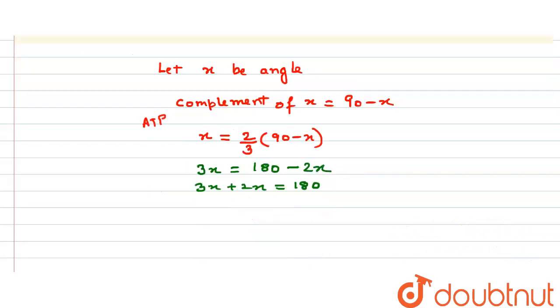Simplifying further, 5x equals 180. So x equals 180 by 5, which can be simplified to 36.